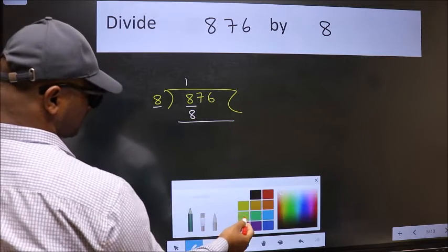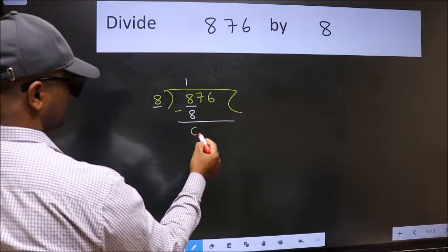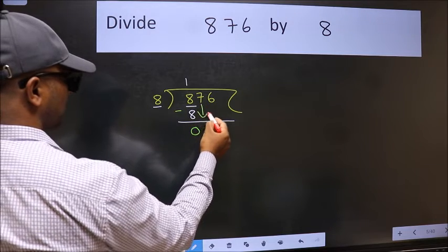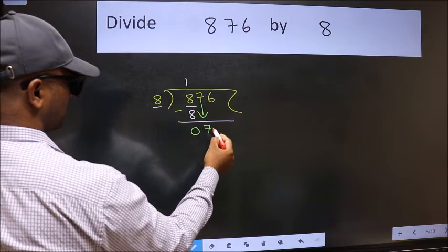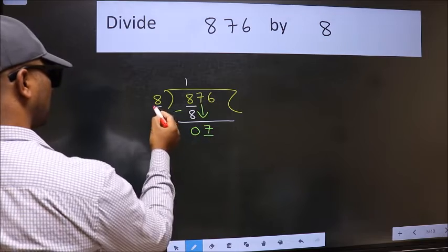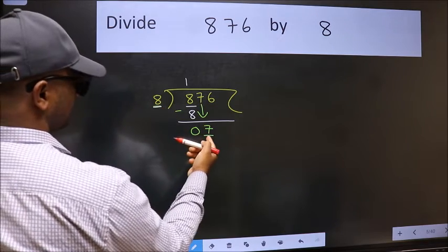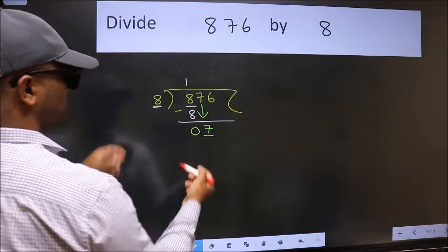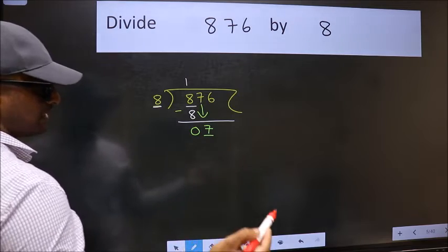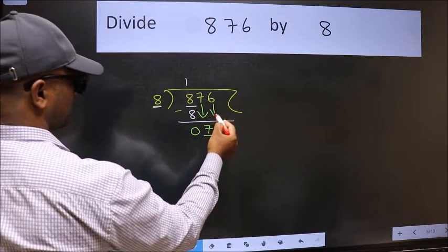Now we should subtract. We get 0. After this, bring down the beside number, so 7 down. Now here we have 7 and here 8. 7 is smaller than 8, so we should bring down the second number.